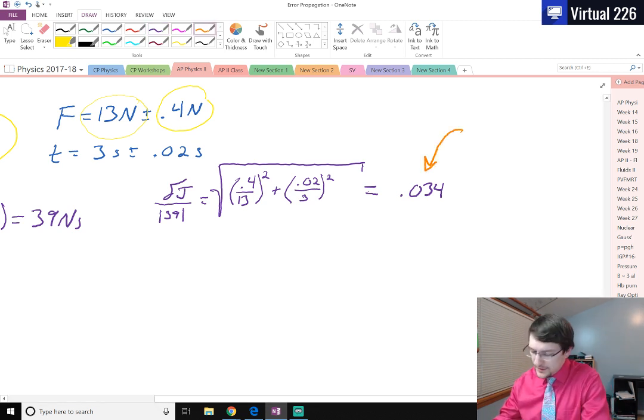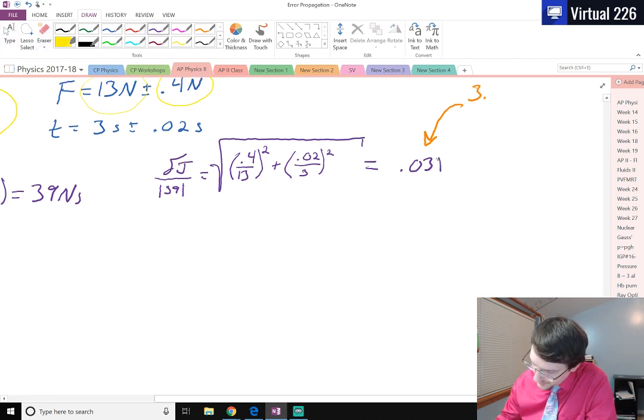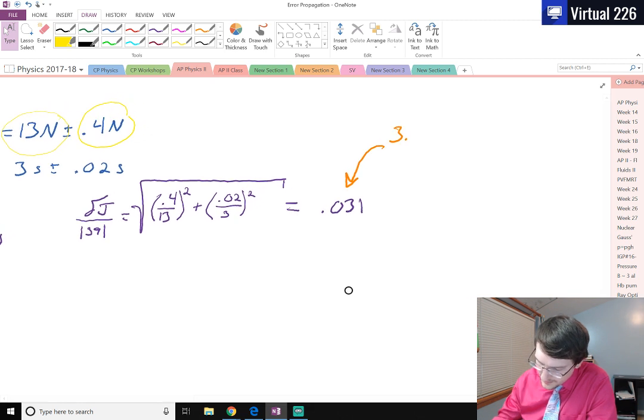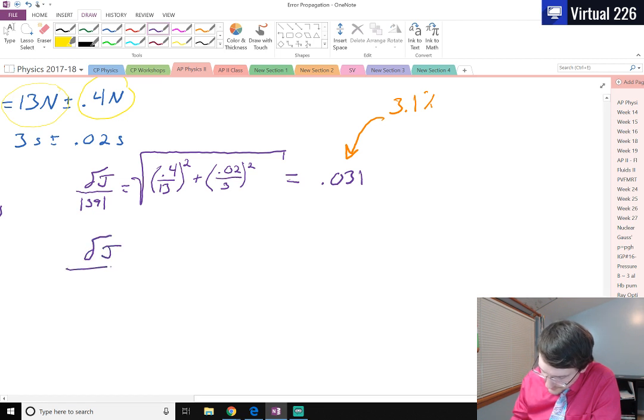What this means here is this number means that my value J, that 39, I'm off by—excuse me this wasn't 3.4, this was 3.1 percent. What this means though is that this is a percentage here, so 0.031 is like being off by 3.1 percent.